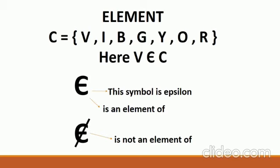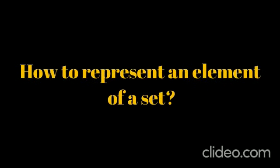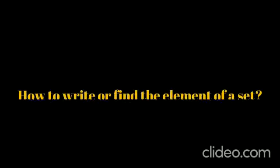If we write 'peach color,' it is not an element of set C. So if we cross the epsilon sign, it actually becomes 'not an element of.' Students, you have learned what a set is, how to represent a set, and how to represent an element of a set. Now I am going to tell you how to write or find the elements of a set.